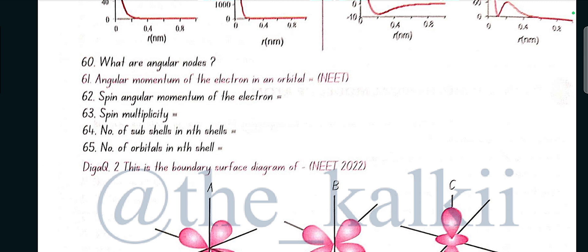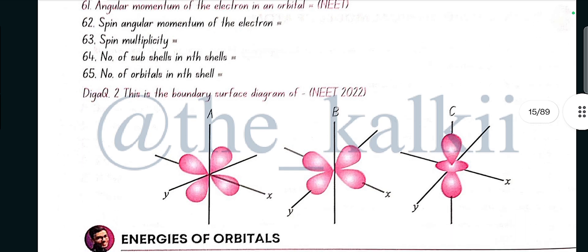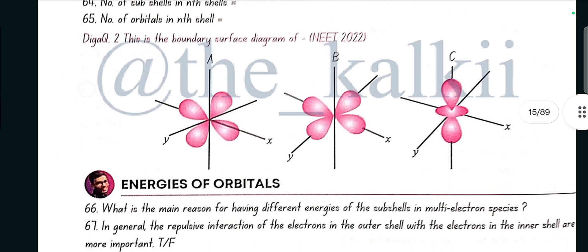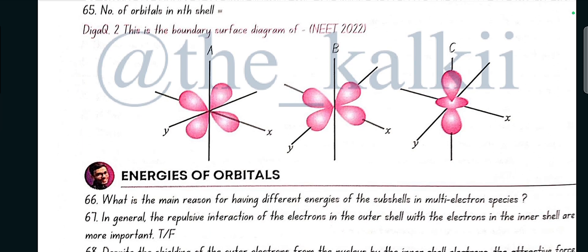Number of subshells in nth shell is n. Number of orbitals in nth shell is n square. Diagram 2: This is the boundary surface diagram of - so here, A is dyz, B is dx square minus y square, and C is dz square.